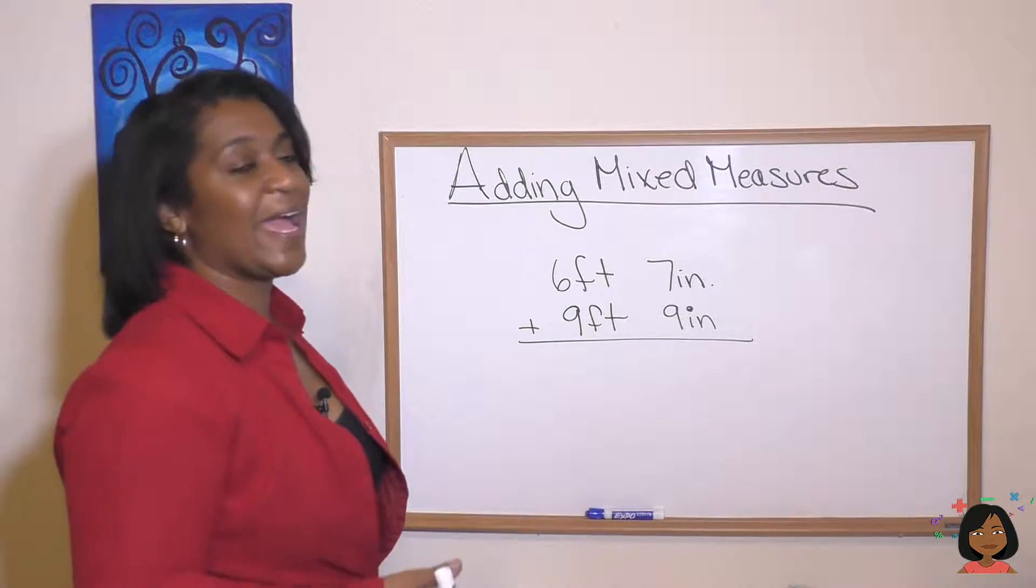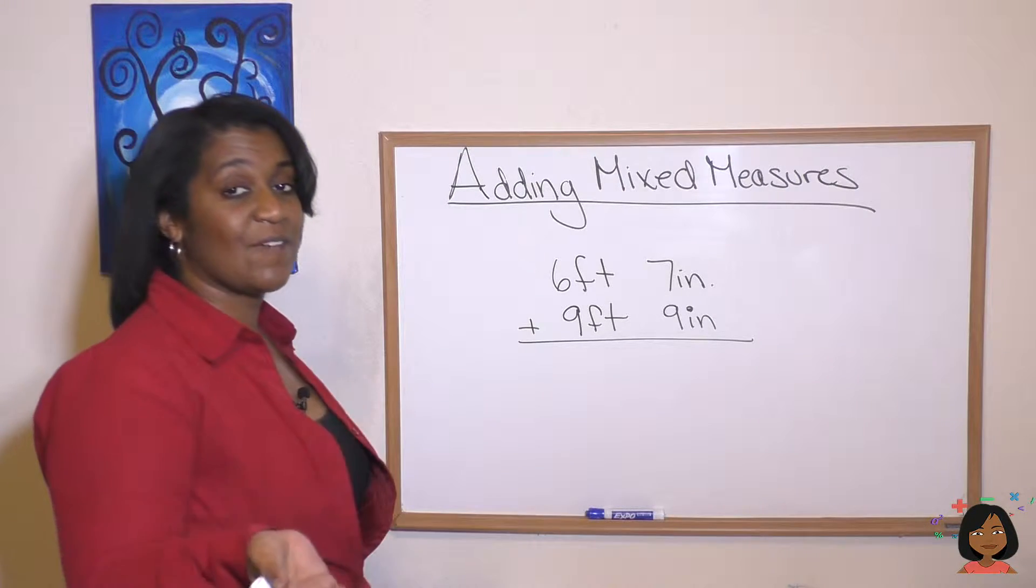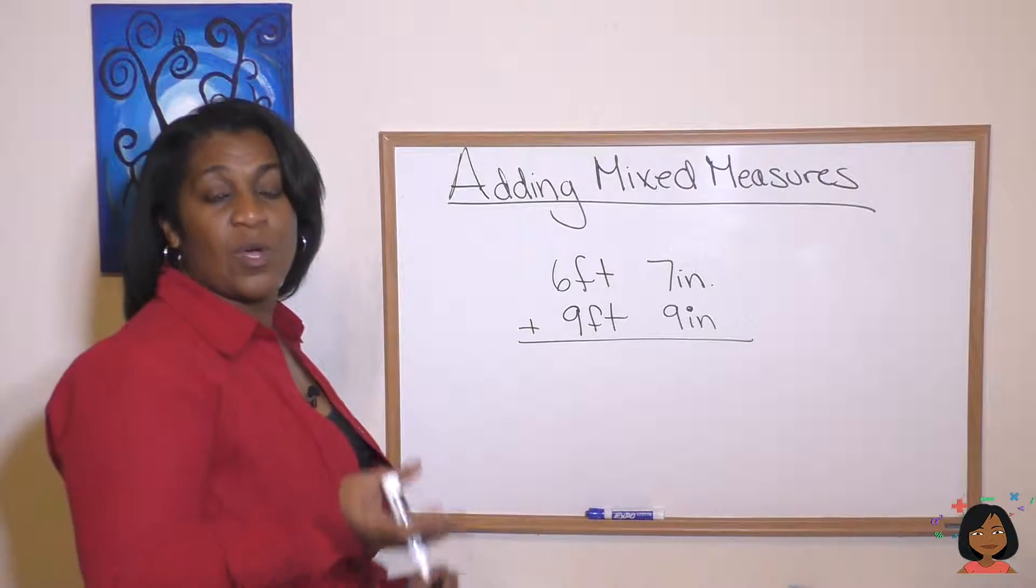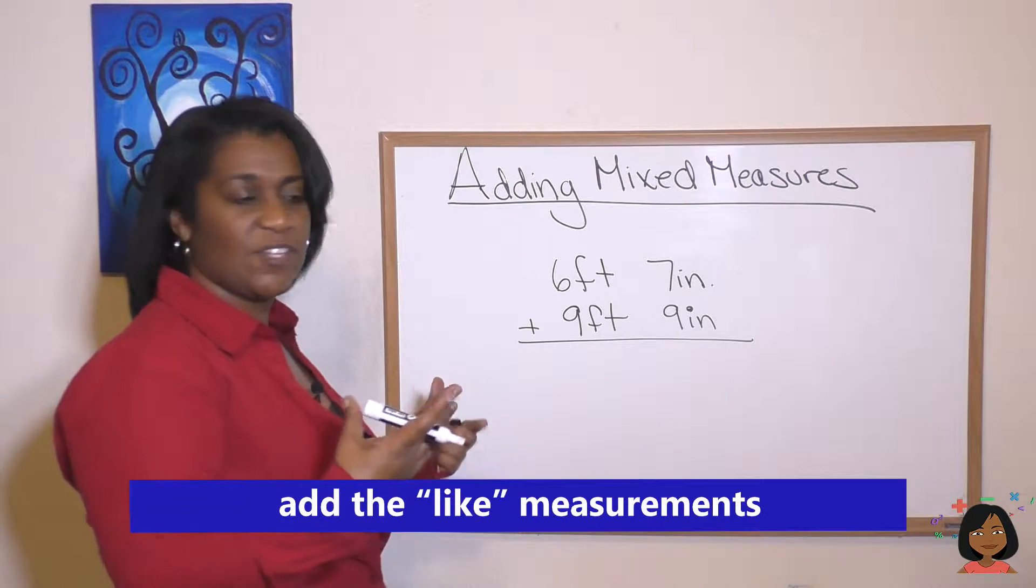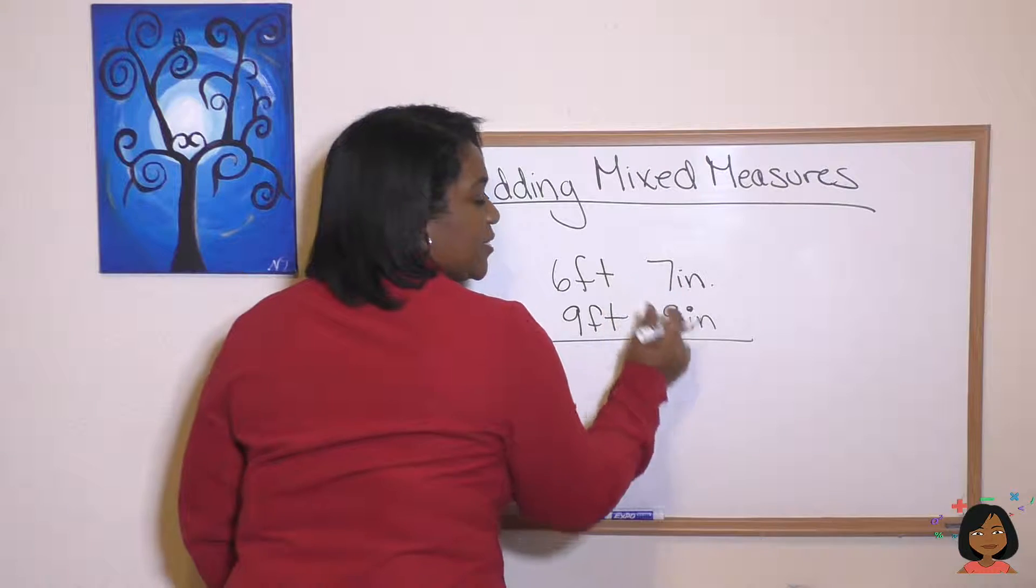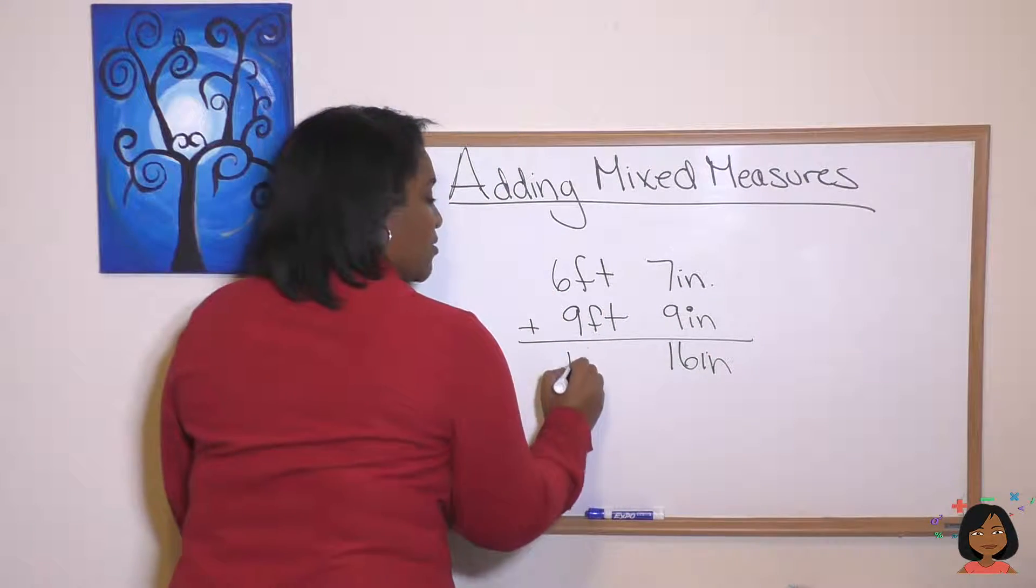Here I have one for you where we're adding feet and inches. So let's say we want to add six feet, seven inches to nine feet and nine inches. Well, let's add each of the like measurements individually. So nine and seven is 16 inches and nine and six is 15 feet.